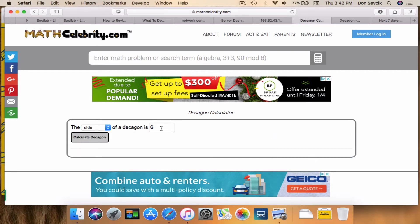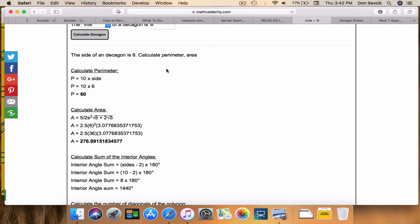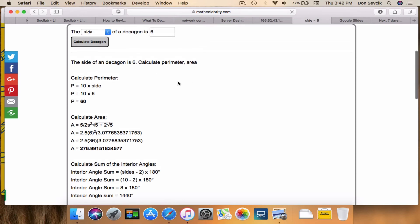We're just going to pick a Decagon with a side of 6. And we're going to hit calculate Decagon. And when we do, it's going to walk through all the calculations that we walked through in the video. But the cool thing is, it's going to substitute S equals 6 for this particular Decagon.